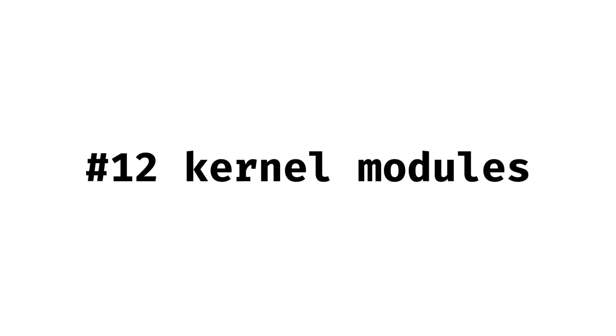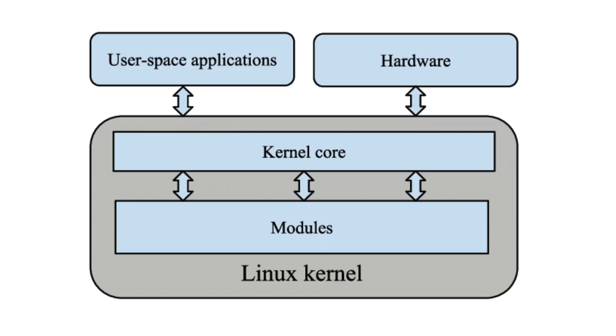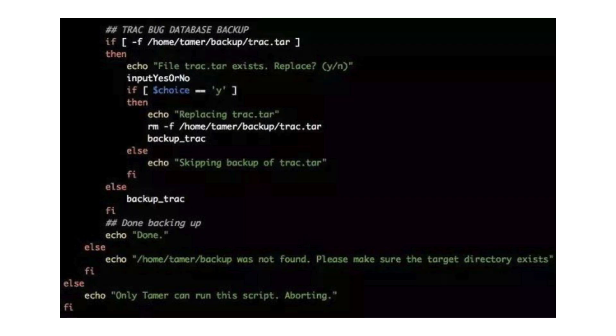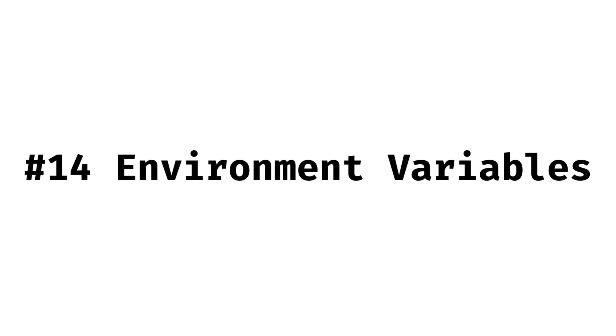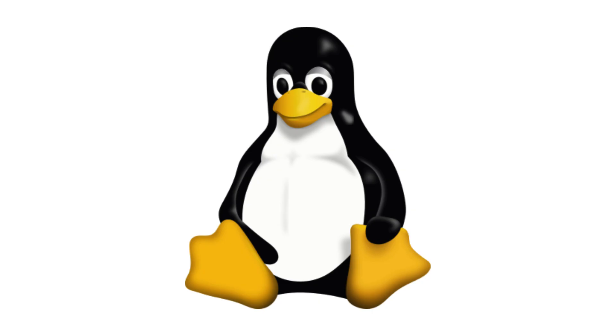These programs can also depend on kernel modules, pieces of code you can load into the kernel to add features like hardware drivers. To automate tasks, you can write a shell script, a simple text file with a list of commands. Scripts and commands often rely on environment variables, like $PATH, which tells Linux where to look for executables.